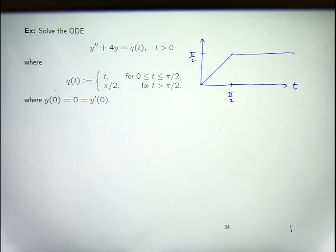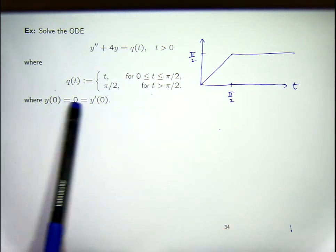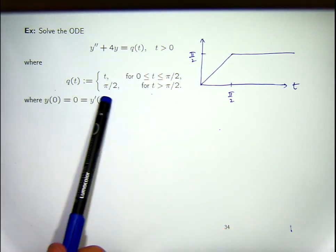Here we are asked to solve a second-order linear ODE with the right-hand side Q of T defined in a piecewise manner. We're also coupling that problem with some initial conditions.